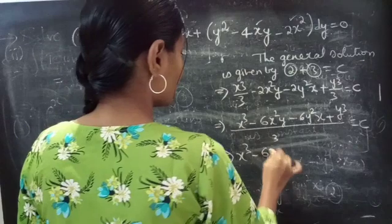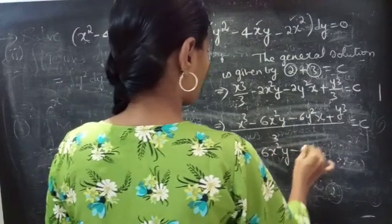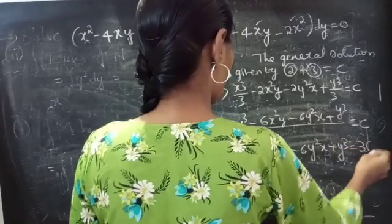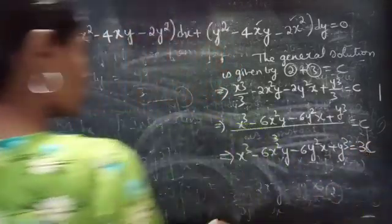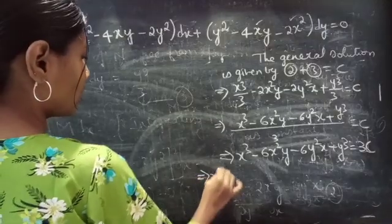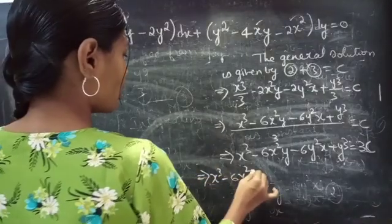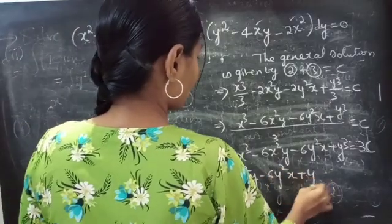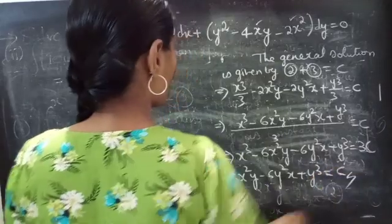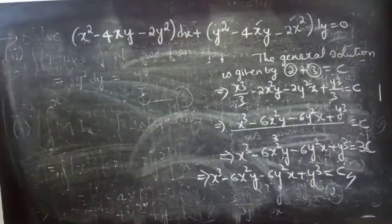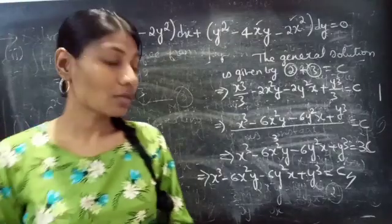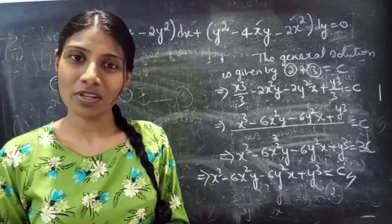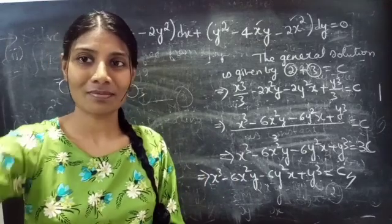Therefore x cubed minus 6x squared y minus 6y squared x plus y cubed equals to 3c. Since c is a constant, we can write 3c as c. So x cubed minus 6x squared y minus 6y squared x plus y cubed equals to c is the general solution. We have seen a problem from exact equations. Hope you will understand. We will see you in the next video. Bye-bye.